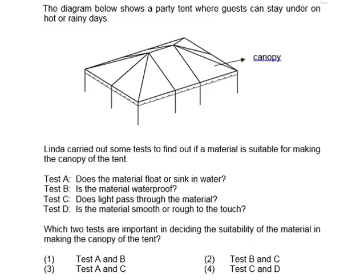The diagram below shows a party tent where guests can stay under hot or rainy days — normally this is outside. Under hot days, it will block the sunlight so that people can be under it comfortably. Under rainy days, it will block the rain and not allow the guests and whatever is under the tent to get wet. Linda carried out some tests to find out if the material is suitable for making the canopy of the tent — the top part which shields guests from sunlight and from the rain.